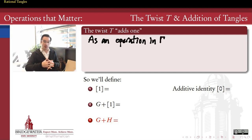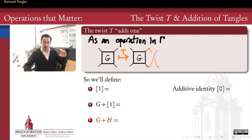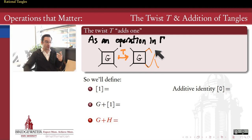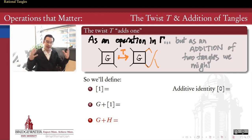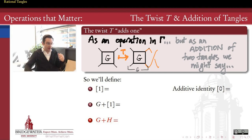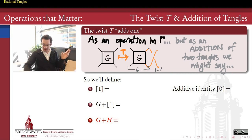We're going to take each of our tangle group operations one at a time, first thinking about the twist operation. In the tangle group, the twist merely adds one more crossing over to the right side. Today we're using the convention that the twist where the upward-sloping strand goes over is our positive one twist. So, can we re-envision that operation as instead an addition of two tangles? We could do that by taking the tangle g and setting alongside it another tangle — we'll call it tangle 1, this single orange crossing — and then combining them together by connecting up the strands. We're going to call that the operation of addition for tangles.